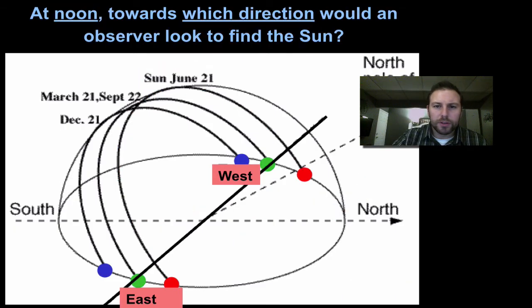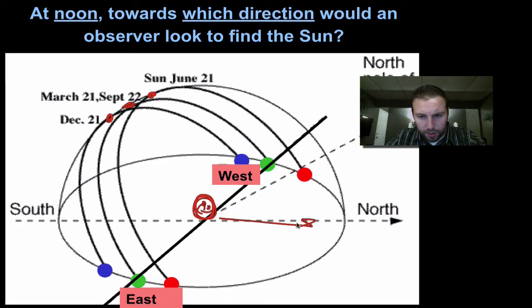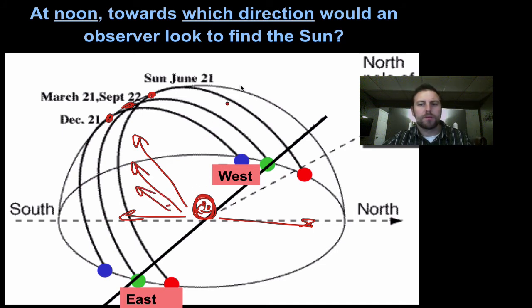At noon, towards which direction would an observer look to find the sun? So we want at noon. Remember, noon is right up here, it's where these paths are at their highest point. So it doesn't matter if we're at this one, here, or here. If you're an observer standing right here, do you look to the north or do you look to the south? Well, these are our noon positions, so you have to look towards the south to see our noon sun. Remember, in the northern hemisphere where we are, Long Island, 42 degrees north latitude, we need to look to the south to see the noon sun.